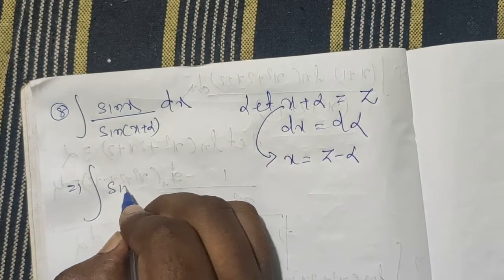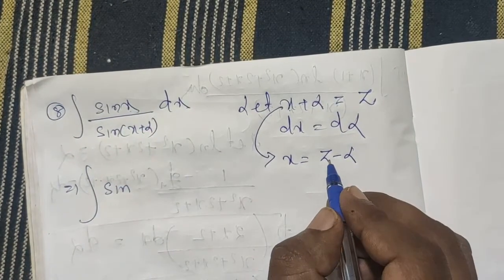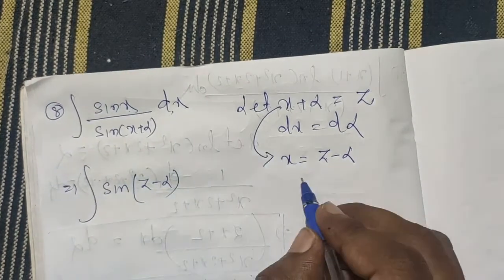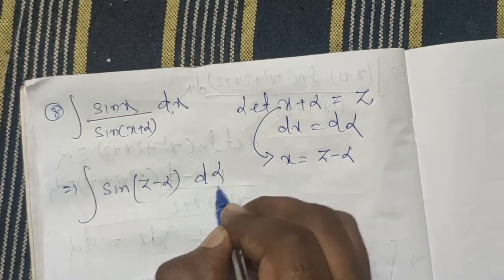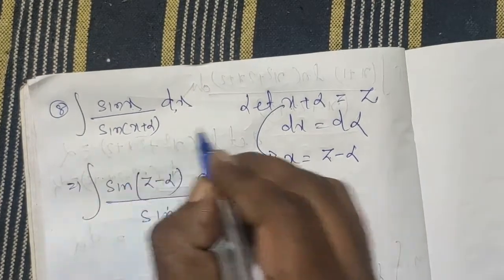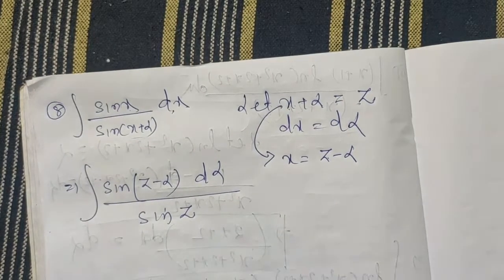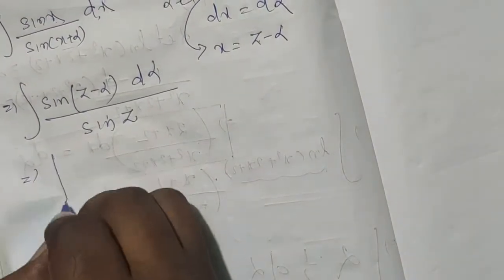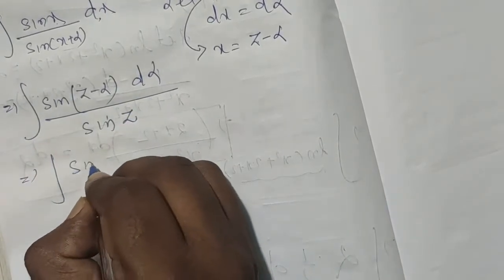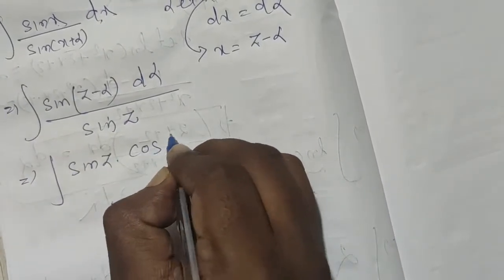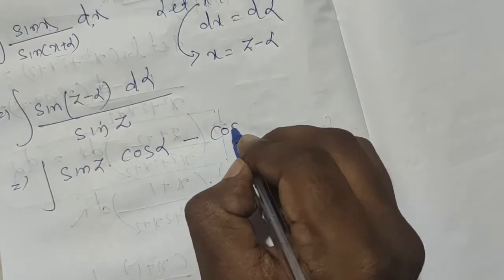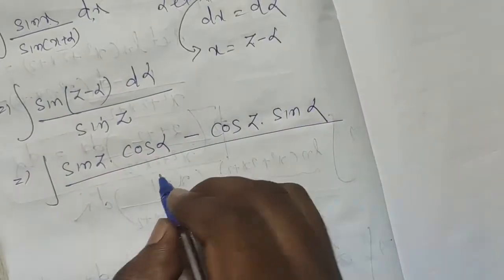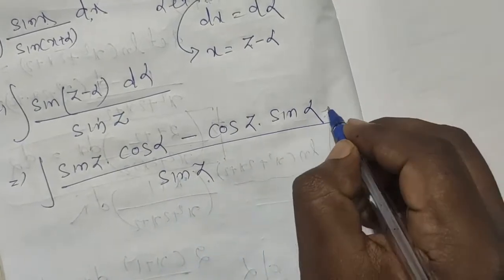Let x plus alpha equal z, so x equals z minus alpha and dx equals dz. Then sin(x plus alpha) equals sin z. We expand using the sin(a minus b) formula: sin a cos b minus cos a sin b, giving sin(z minus alpha), all divided by sin z, dz.